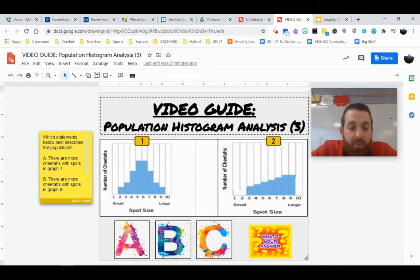Which statement below best describes the population? So each of these histograms represents a population. Let's see which one we feel best describes the populations.